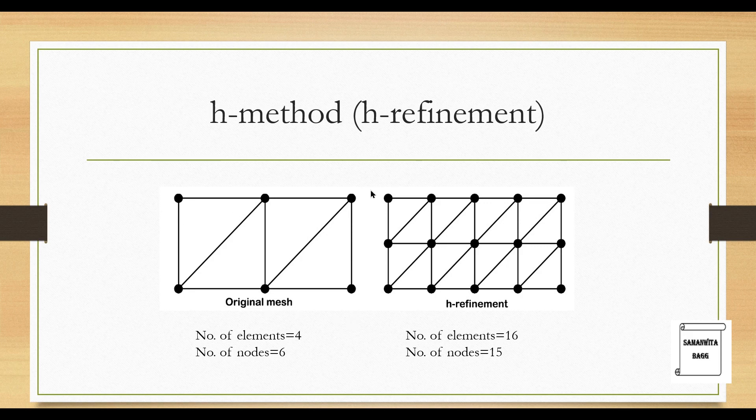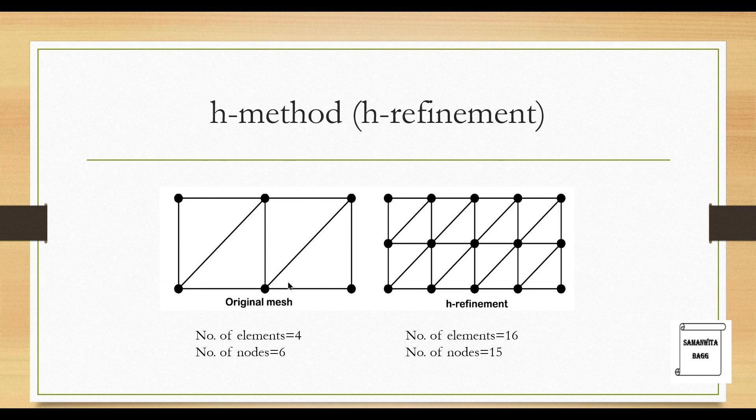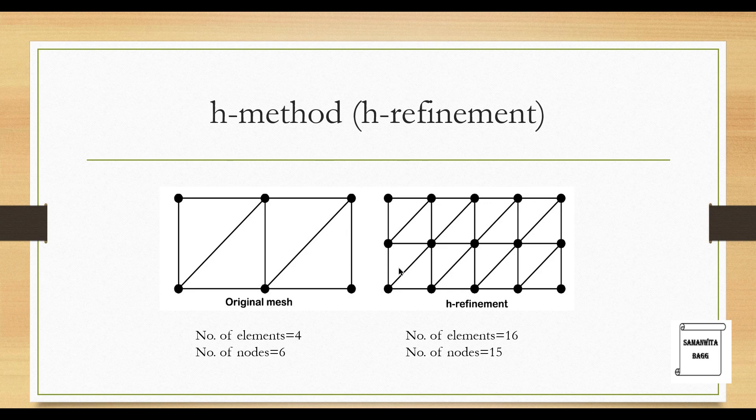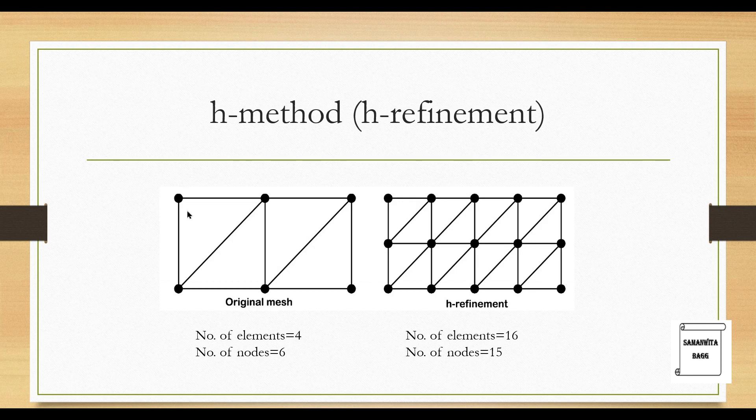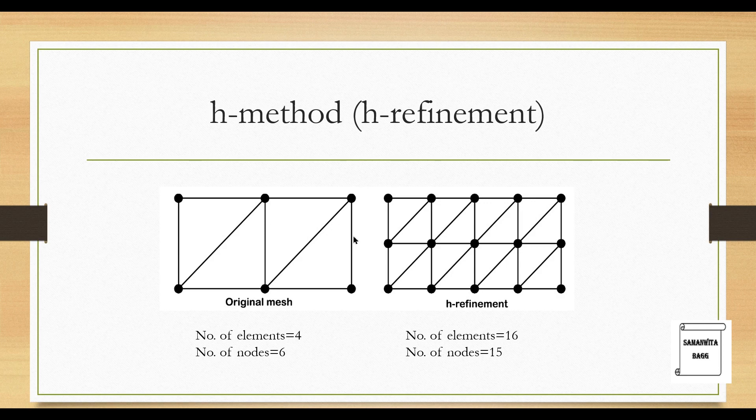Here you can see that in the first case, there is an object which has been meshed in this format with number of elements being 4: 1, 2, 3, 4 and number of nodes here you can see are 6. When you make the mesh finer, what you do is you divide this element. You can see this triangle itself has been divided into 1, 2, 3, 4, four smaller triangles in itself. Similarly this has been divided into 4 and similarly others have also been divided into 4.